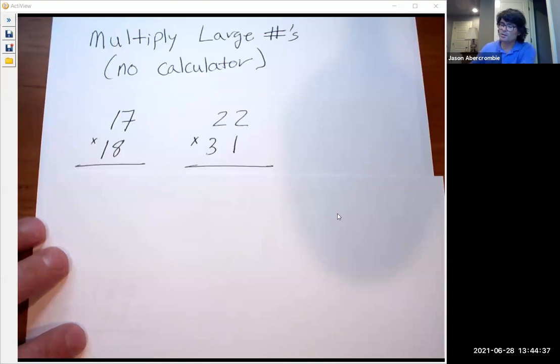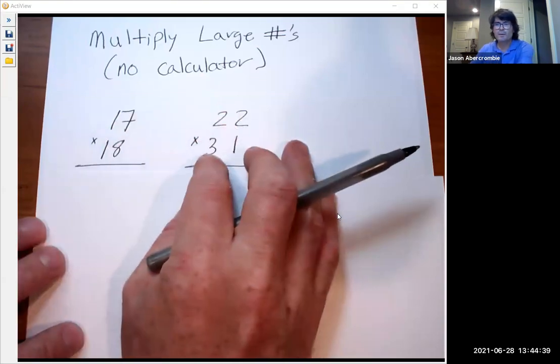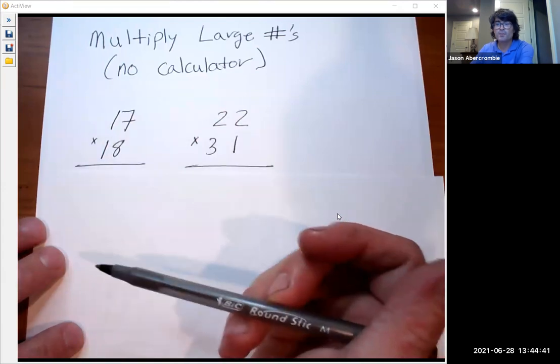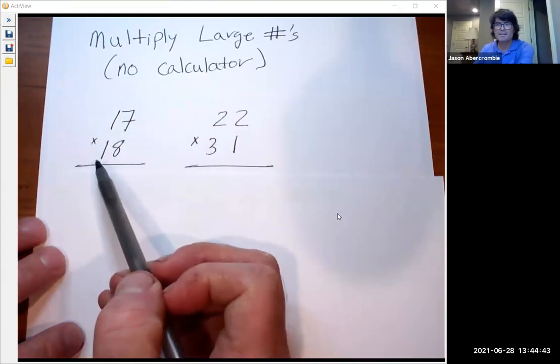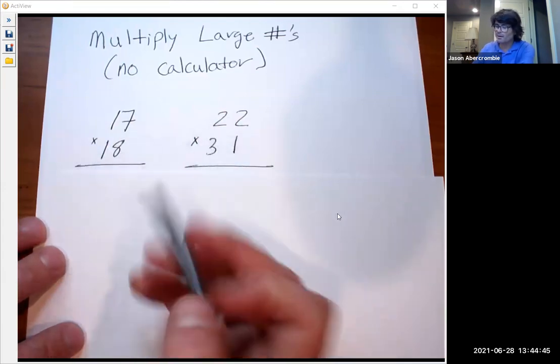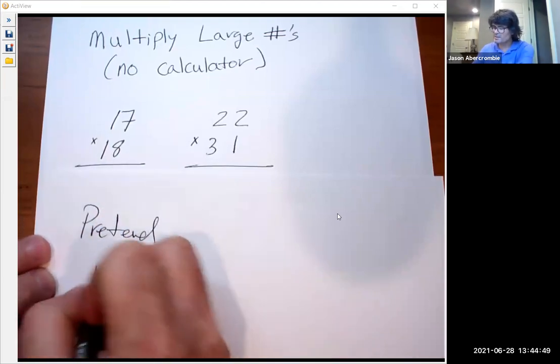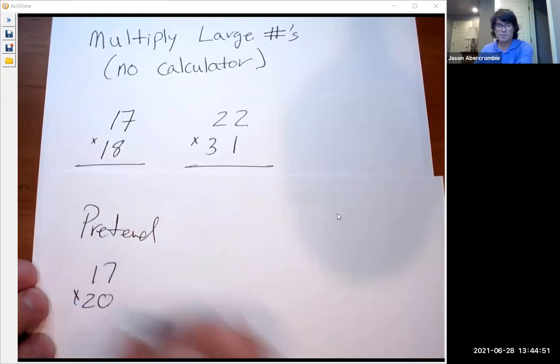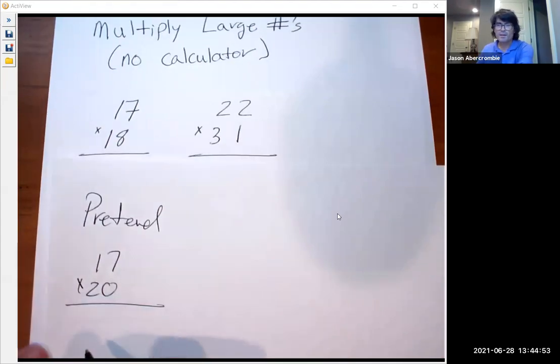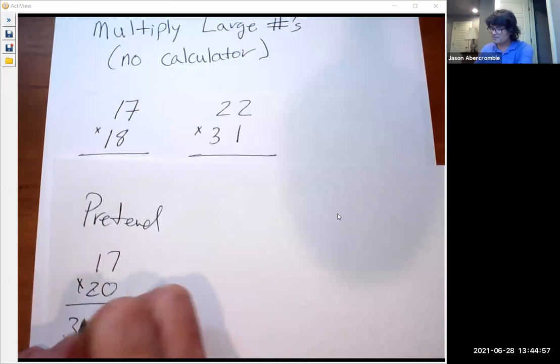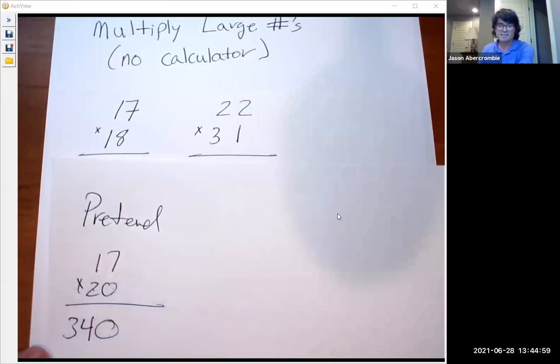My favorite way to multiply two numbers like this is to round up to a known number, like say we round up 18 to 20 for example. I'm just going to pretend this is 17 times 20. And the way you do that is you would do 2 times 17, that's 34, and then add a zero. So we're pretending that we have 17 times 20.